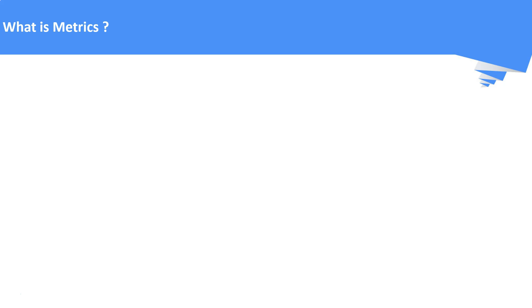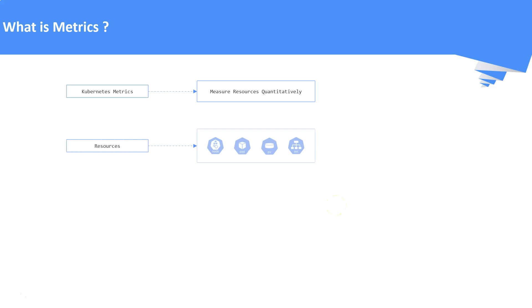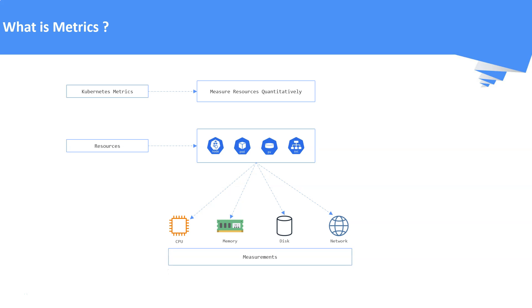What is a metric? In general, a metric is nothing but a system of measurement. With respect to Kubernetes, metrics are used to measure the resources quantitatively. The Kubernetes resources are nothing but pods, nodes, volumes and so on. We are going to measure these resources based on the utilization of CPU, memory, storage and network.